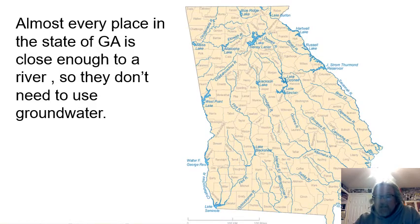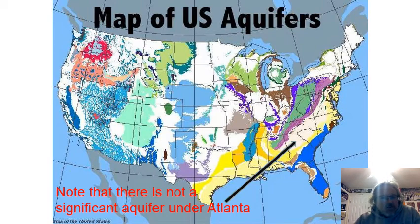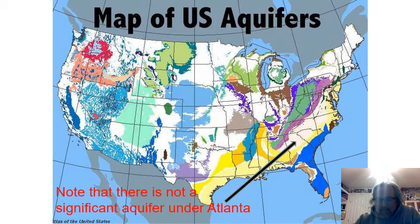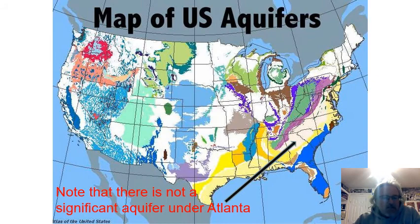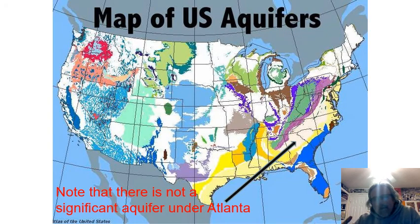Here's a map of major U.S. aquifers, and notice there isn't one under Atlanta. If you drilled down wanting to hit water you would not hit a significant aquifer underneath us. There's water down there, yes, but not enough to call it an aquifer. The reason isn't that it doesn't rain here — it does. The difference is we're on top of granite. Water that rains on top of granite, like Stone Mountain, just sits on top — it doesn't go in easily. If it doesn't go into the granite, you're not going to have water in the granite, and therefore we don't have an aquifer in Atlanta.